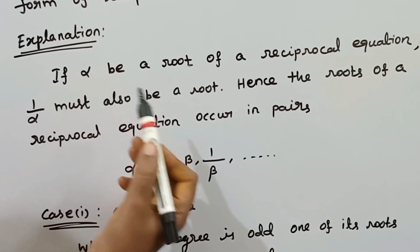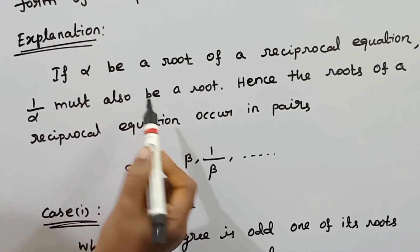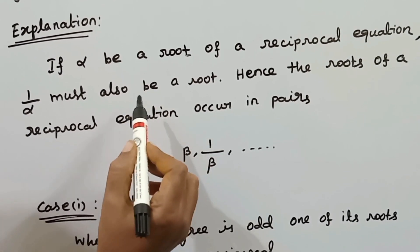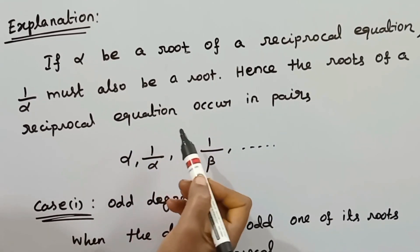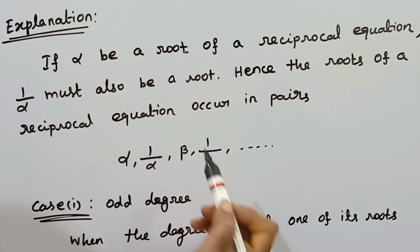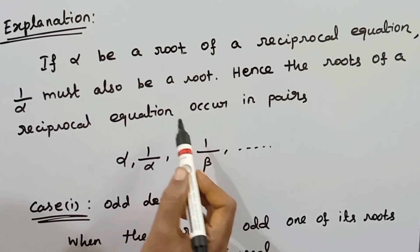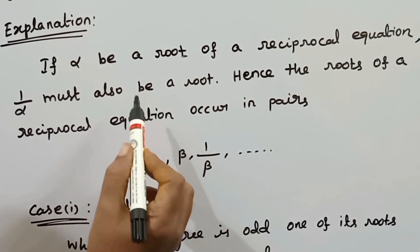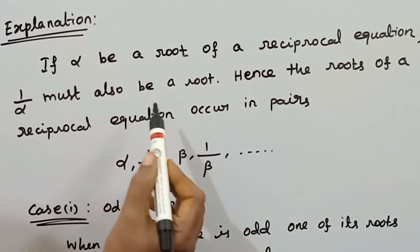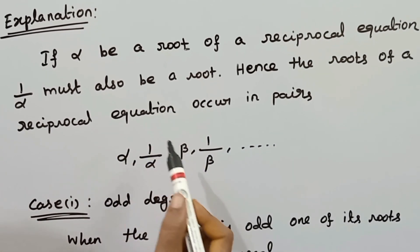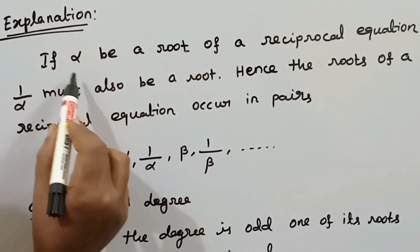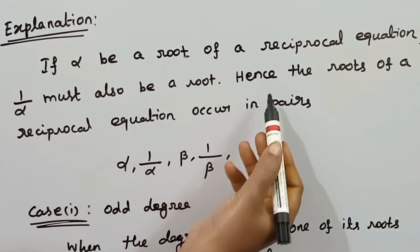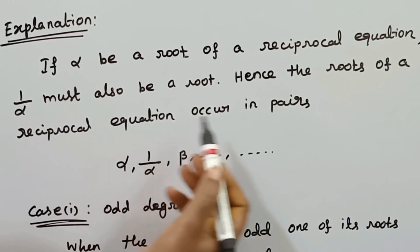We discussed the reciprocal root. If the root of an equation is alpha, we substitute 1 by alpha. Given the equation, we replace x with 1 by x. If we replace the equation, we will have 1 by alpha as a root as well. Hence, the roots of a reciprocal equation occur in pairs.